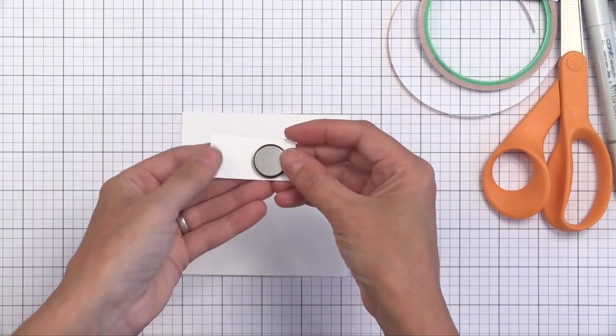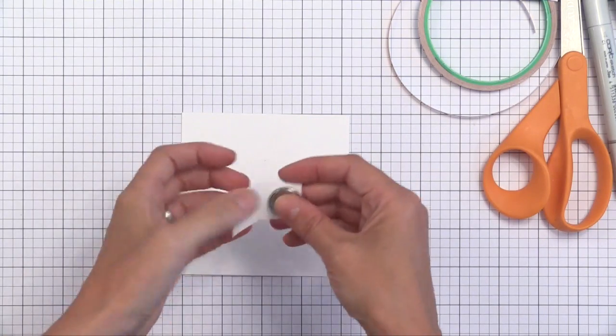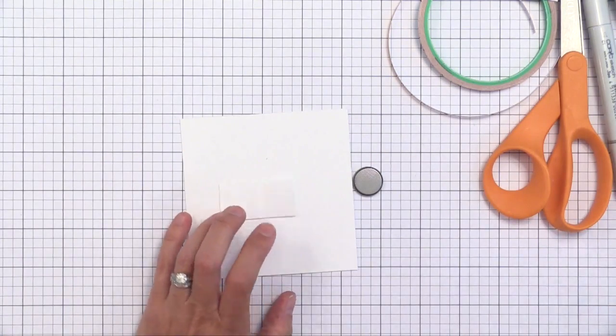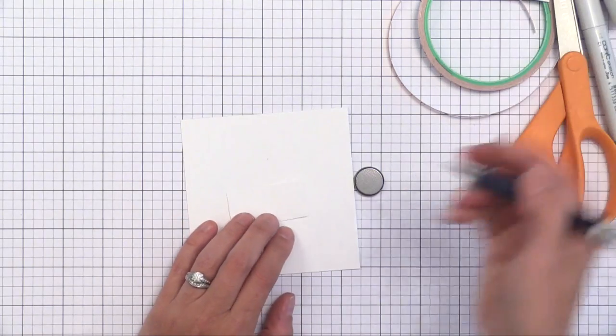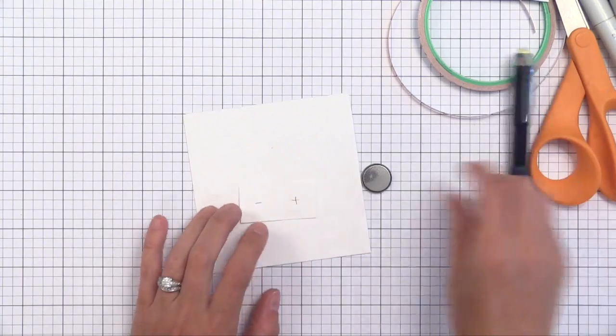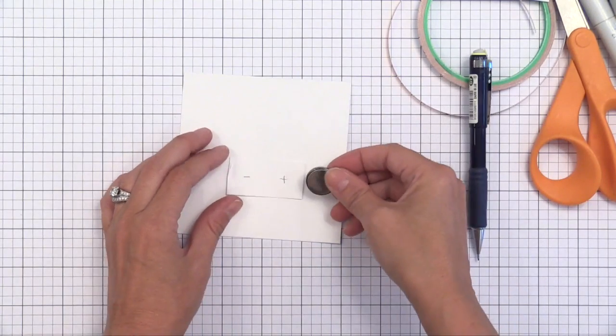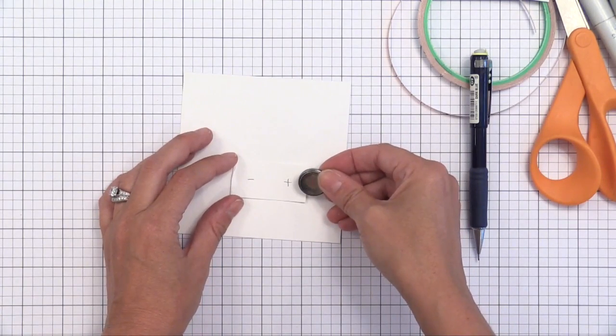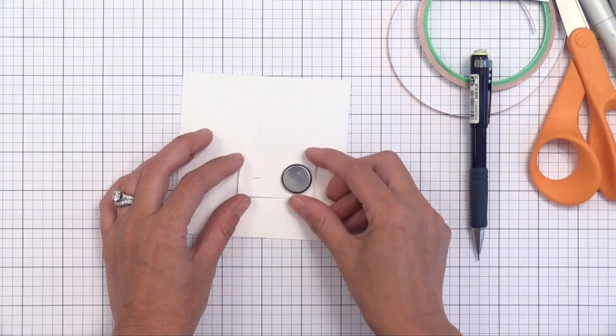Now to make things easier, I like to mark a plus and a minus on these flaps. So I put a plus on one side and a minus on the other. This will help me figure out which way to put my battery in this folded little house. This will make sense when we put the circuit together.